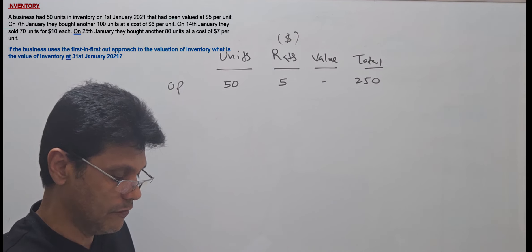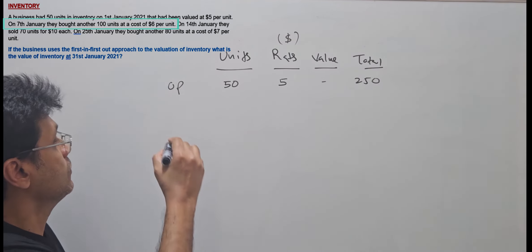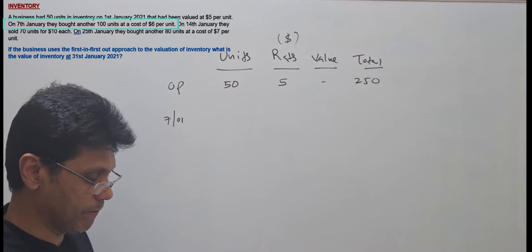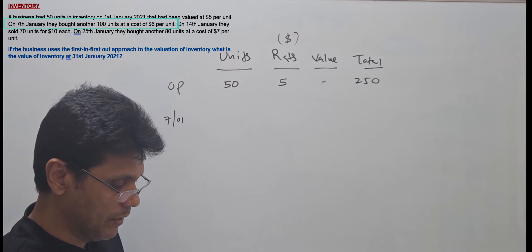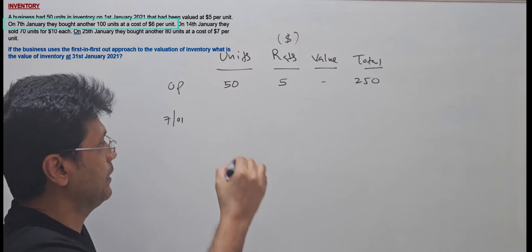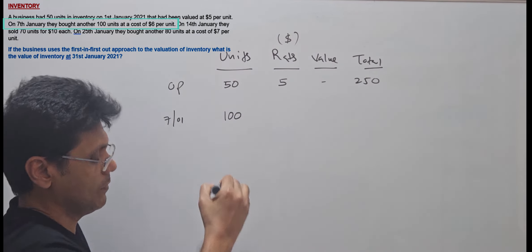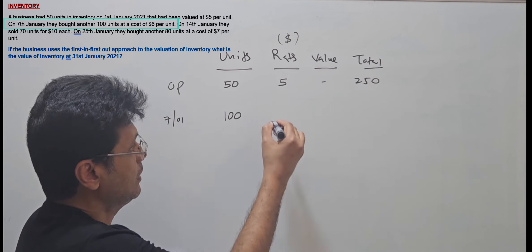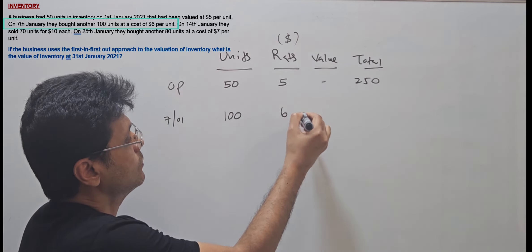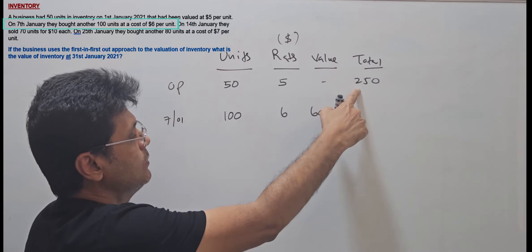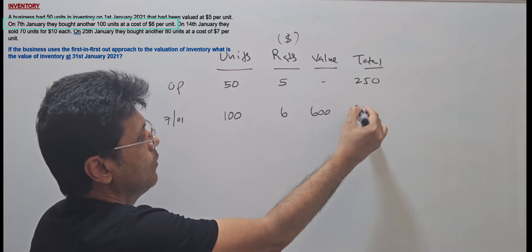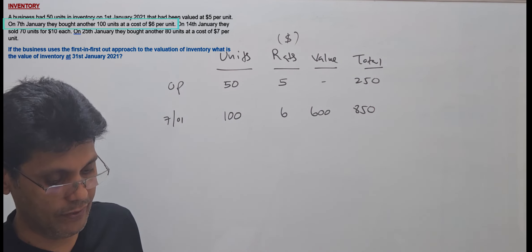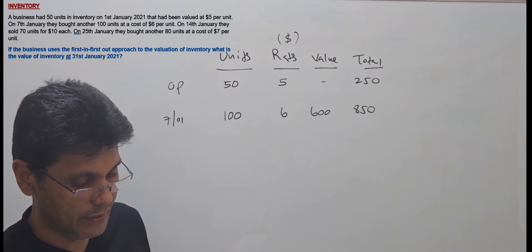On 7th January, they bought another 100 units at the rate of $6, which is $600. Adding to the opening balance, the total value will be $850.